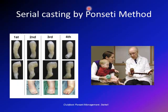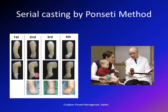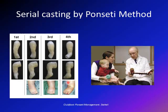The Ponsetti method uses serial casts changed every week to gradually correct the deformity. The first cast corrects the cavus part of the deformity. Subsequent casts correct the hindfoot varus and forefoot adduction. The cast is applied in a specific way that orthopedic surgeons are trained to do, gradually pushing the foot outward to correct the hindfoot varus and forefoot adduction.